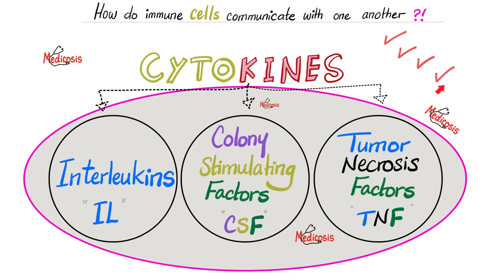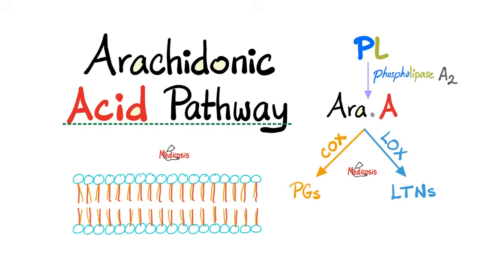Today it's time to talk about prostaglandins. To understand prostaglandins, you need to understand the arachidonic acid pathway first. This is the arachidonic acid. Where does it come from? It is liberated from the phospholipids. Where are the phospholipids located? In your cell membrane, which is a lipid bilayer.